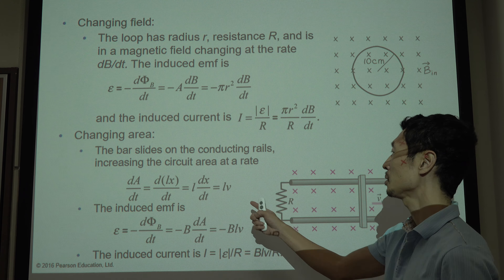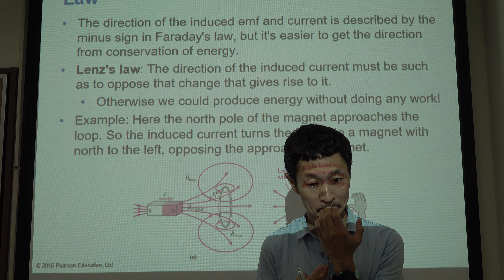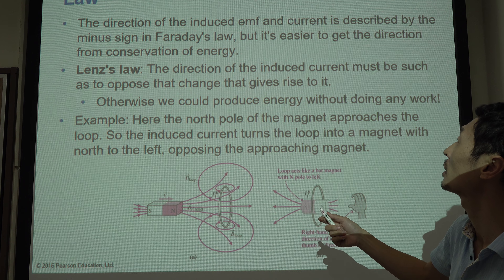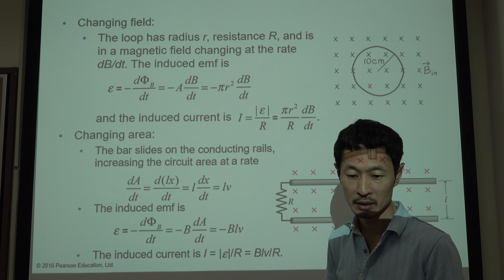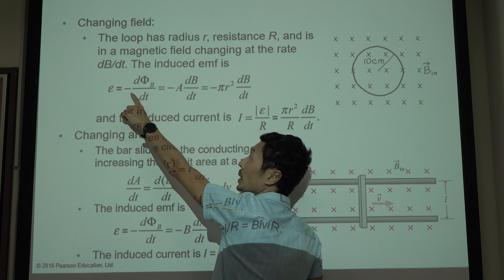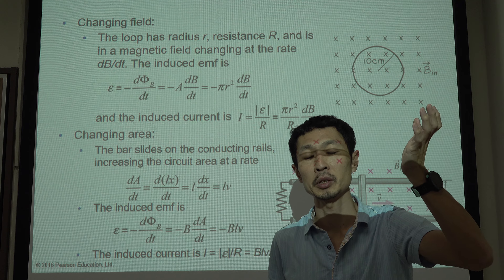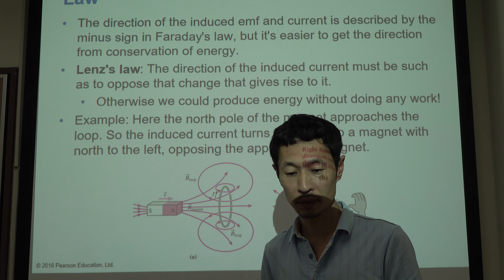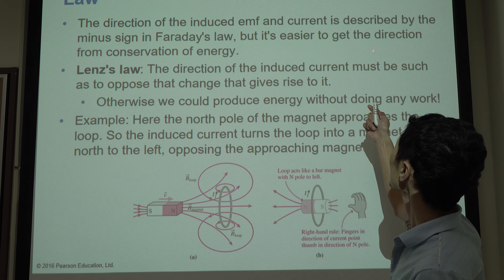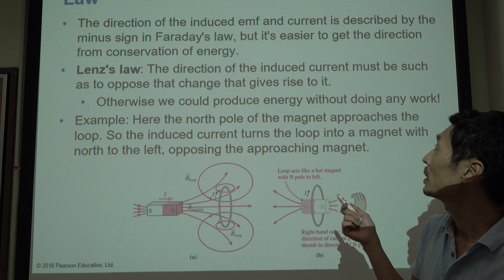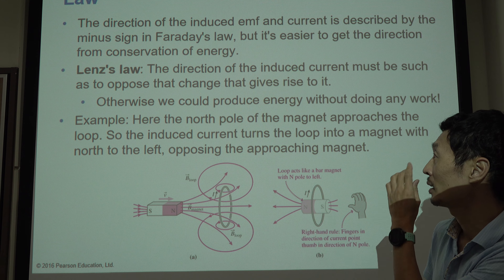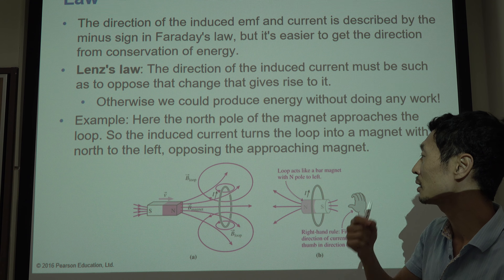How do we know the direction of induced current? Lenz's law is useful. The direction of induced current is described by the minus sign in Faraday's law. But it is easier to get the direction from conservation of energy — Lenz's law. The direction of induced current must be such as to oppose the change that gives rise to it. Otherwise, we could produce energy without doing any work, which doesn't make sense.